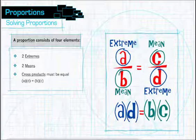This rule is what allows us to find missing quantities in proportions. We'll show you how it works.